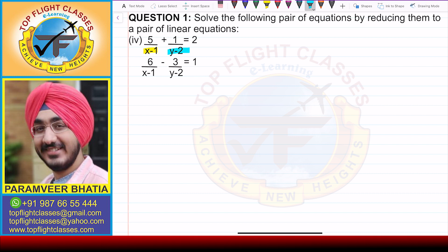So what do we do? 1/(x-1) equal to p and 1/(y-2) equal to q.